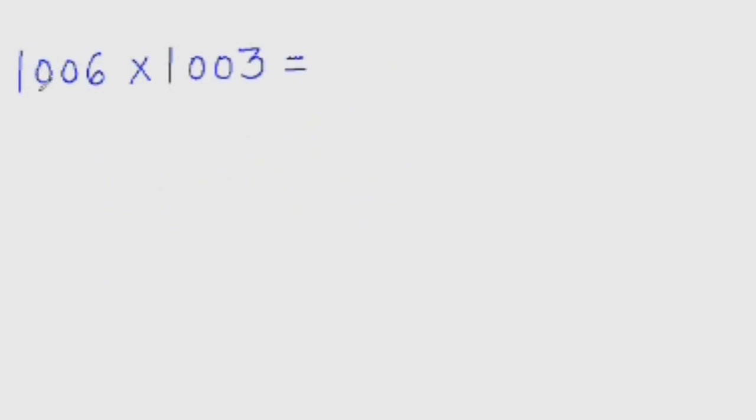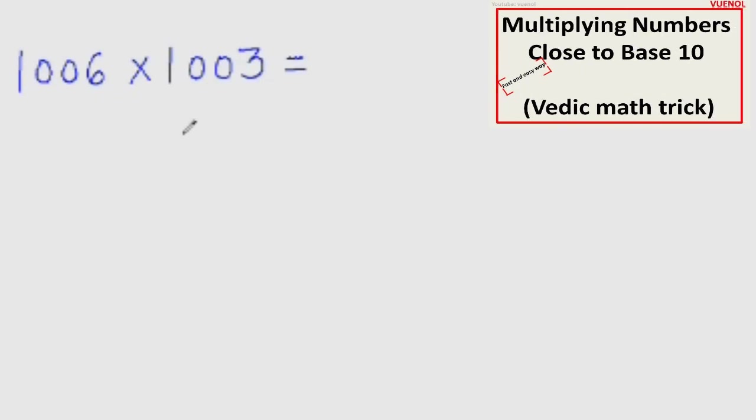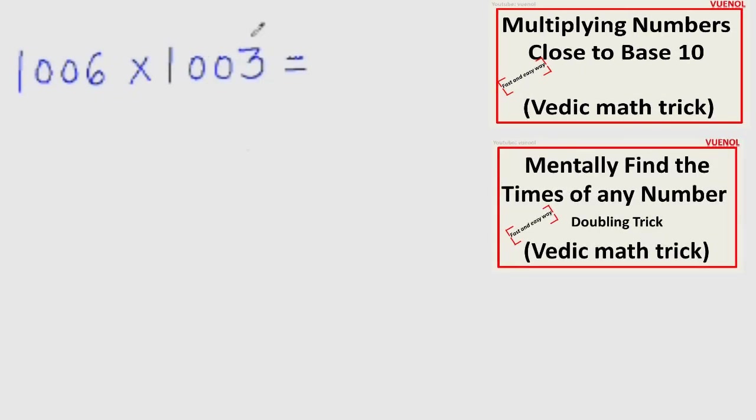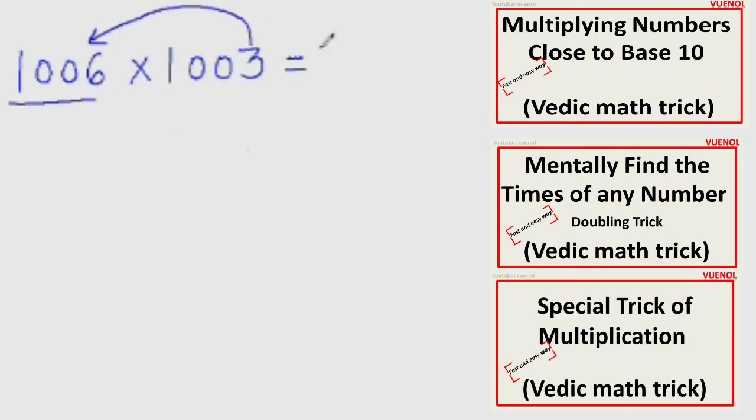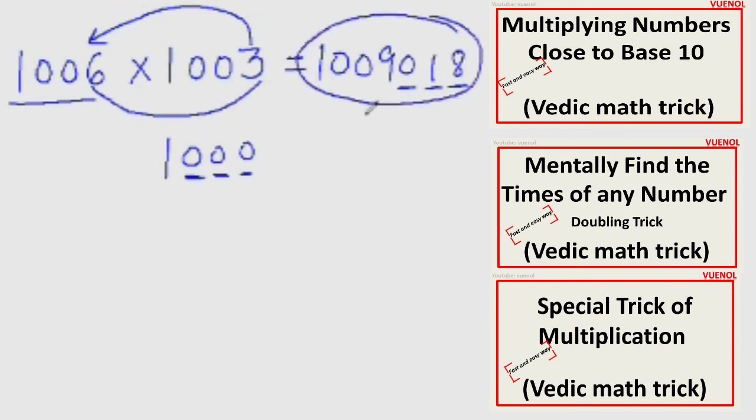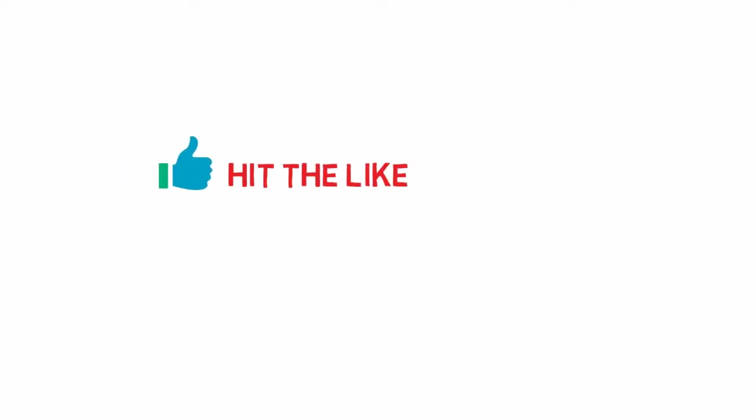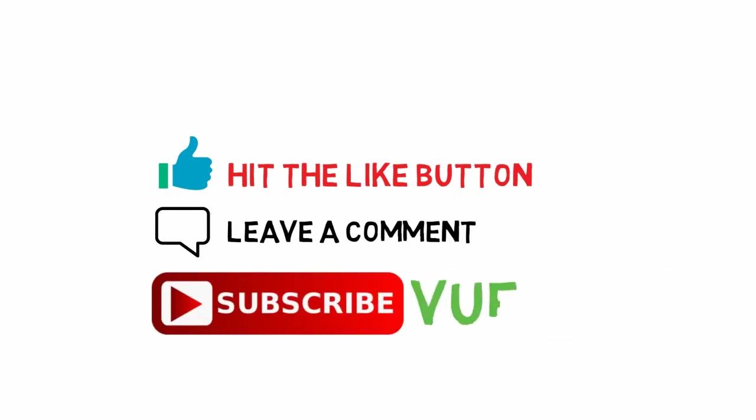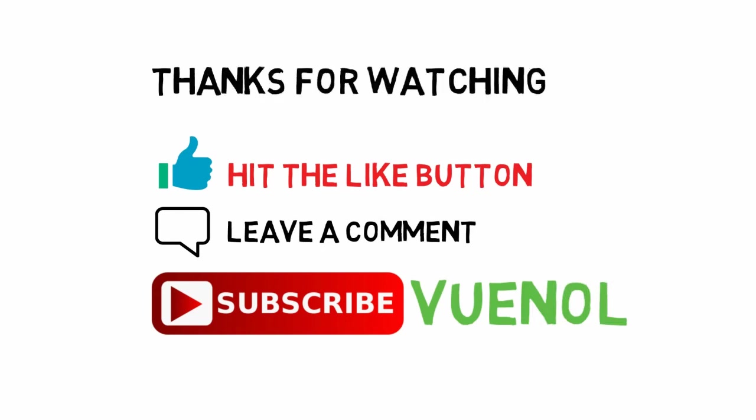Now let's see if you can multiply 1006 with 1003. Now you are trying to multiply 2 four-digit numbers. And you will see that it is as easy as multiplying a single-digit number. So again same thing. Add this 3 to this entire number. So it would be 1009. Now what you must have observed is that the base here is 1000. 1000 has 3 zeros. So 3 more places to go. So 6 times 3 is 18. So we write 0, 1, 8. That's our answer.